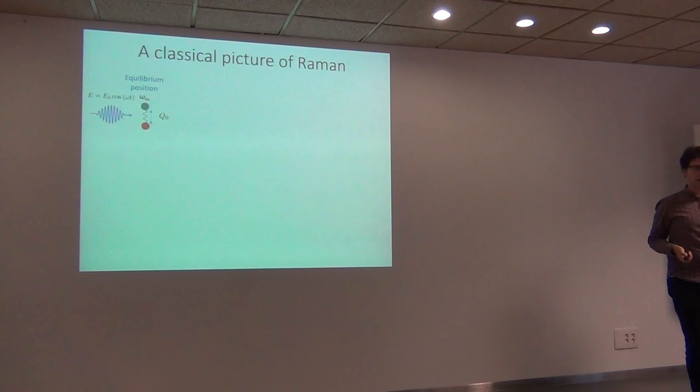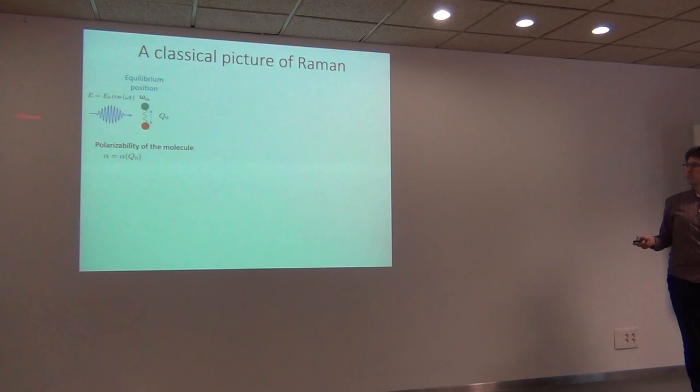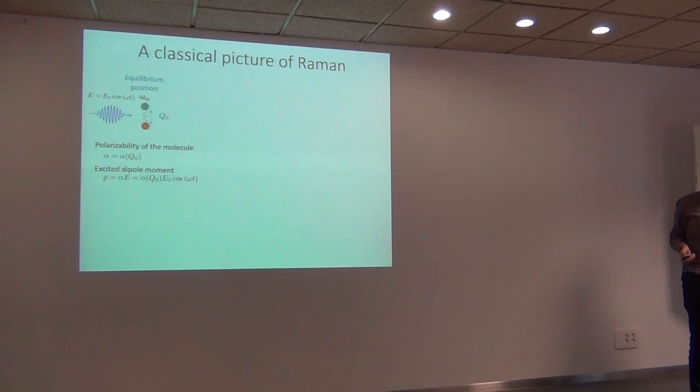How can we understand Raman from a very classical perspective? In elastic scattering, we have a molecule described by a generalized coordinate Q, which describes the position of all the atoms, and the molecule is characterized by a polarizability. By definition, the dipole moment is proportional to the polarizability; as the polarizability is constant, it oscillates at the same frequency as the incoming laser. That's straightforward for the case of an elastic response.